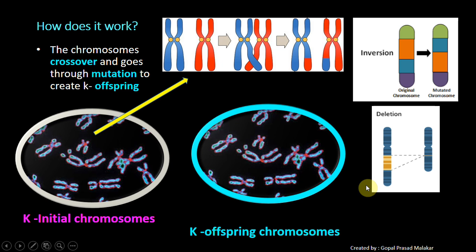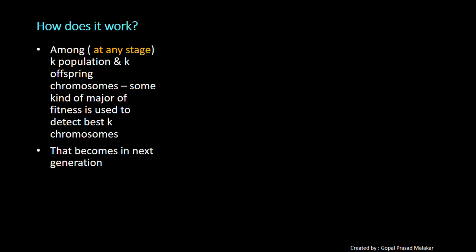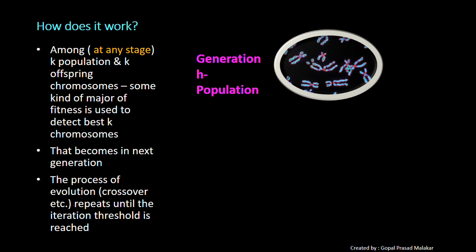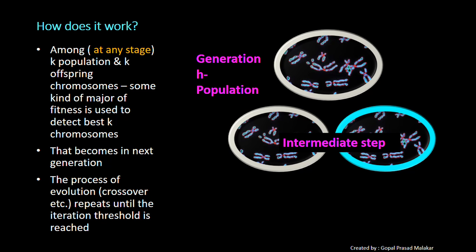This is how you create the K offspring chromosomes. If you look carefully, it has those crossover components which got created from the parents or got created through mutation. So now you have K plus K, 2K chromosomes. And using some kind of fitness function, you select the best K among them.